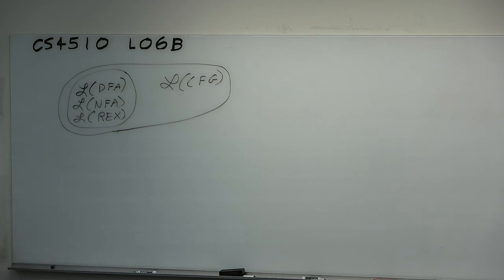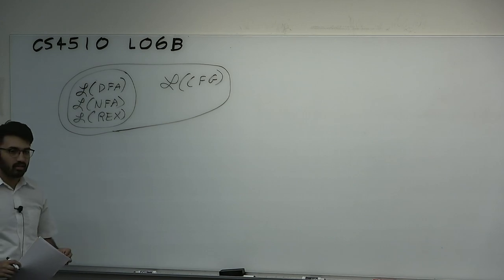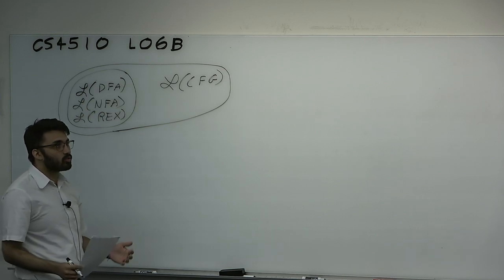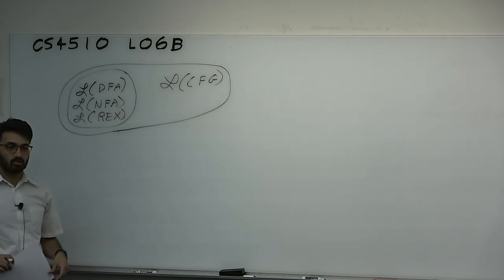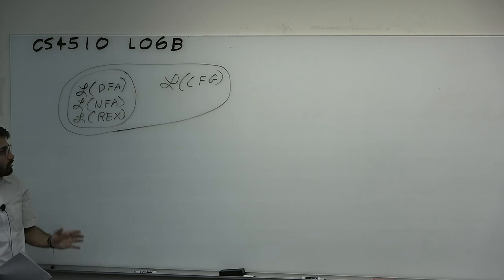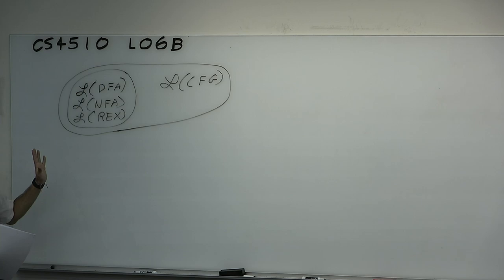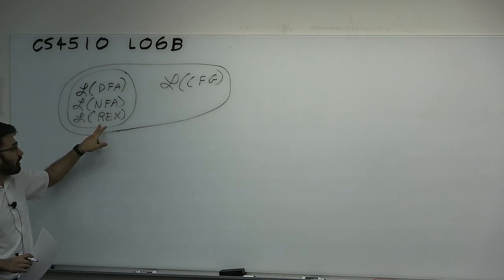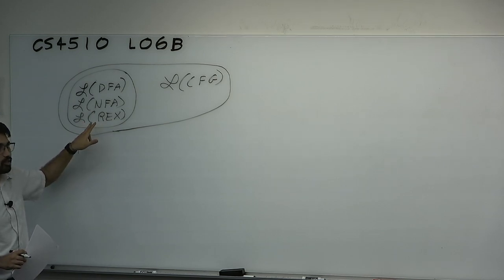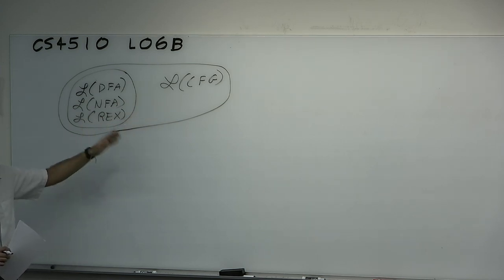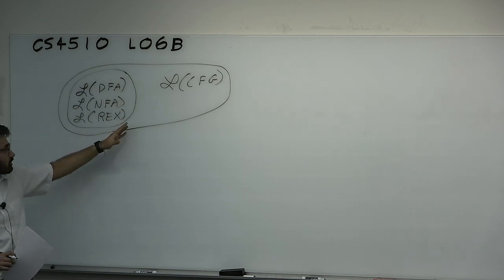Examples include A^n B^n and WW^R. But we also mentioned there were things that were not context-free — things outside the system. Context-free grammars, although not an obvious model of computation, still have languages outside them, which we'll prove next lecture. Today this is the picture of our universe so far — a Venn diagram of the classes of languages we know and their relationship. Every regular language is also context-free, which we proved using regular expressions and regular grammars.